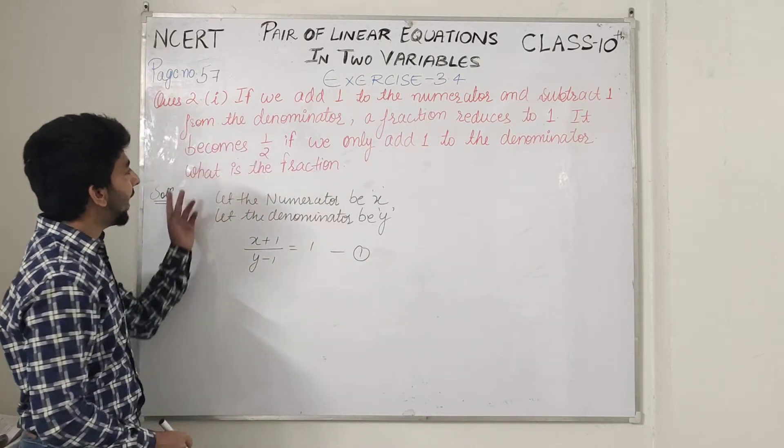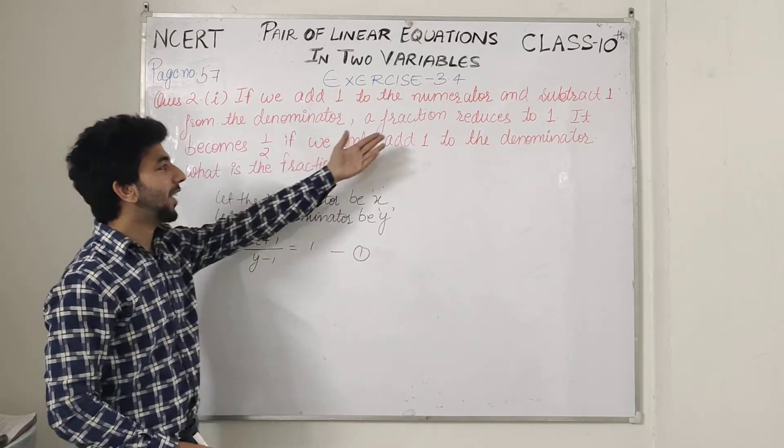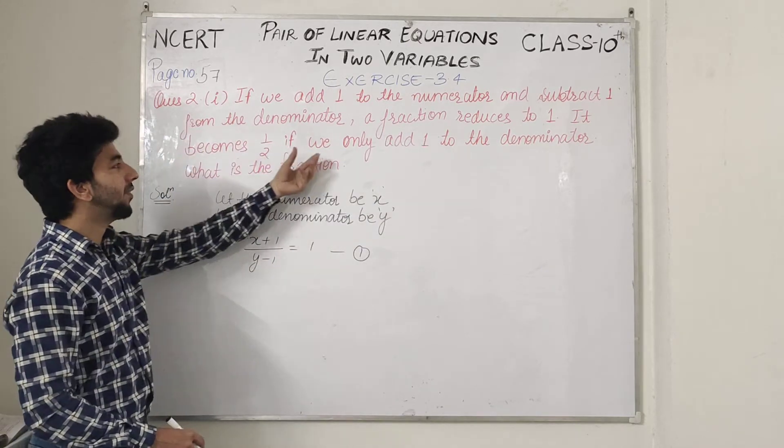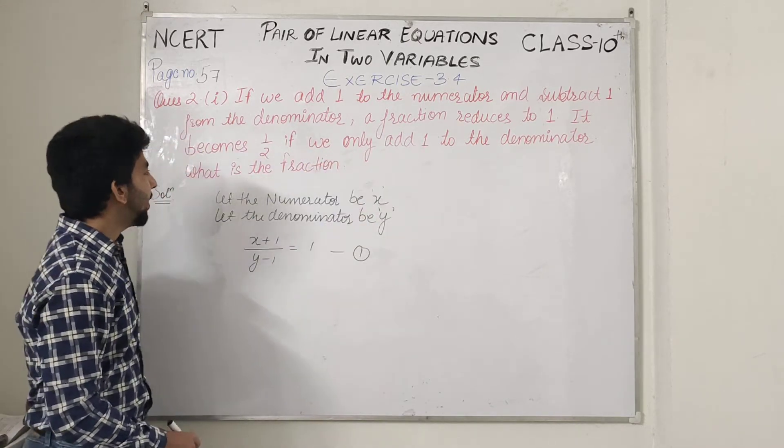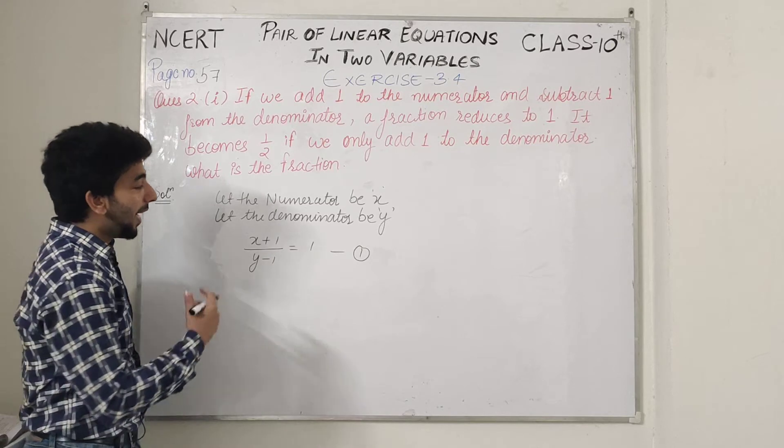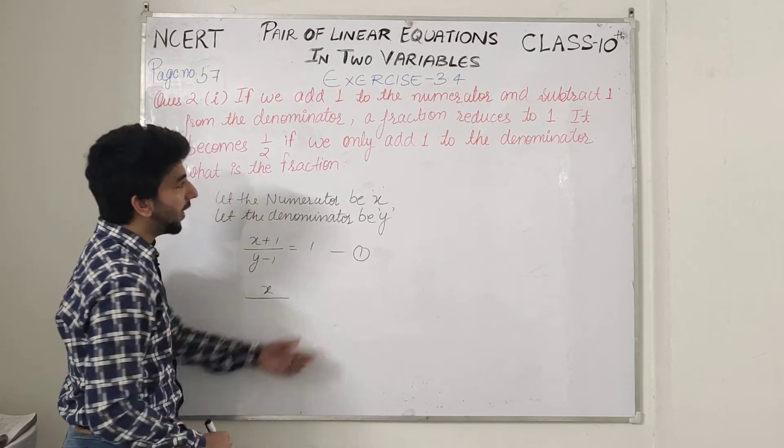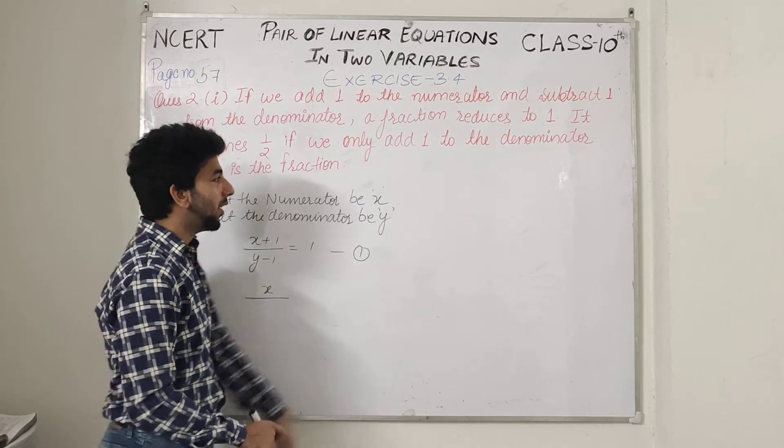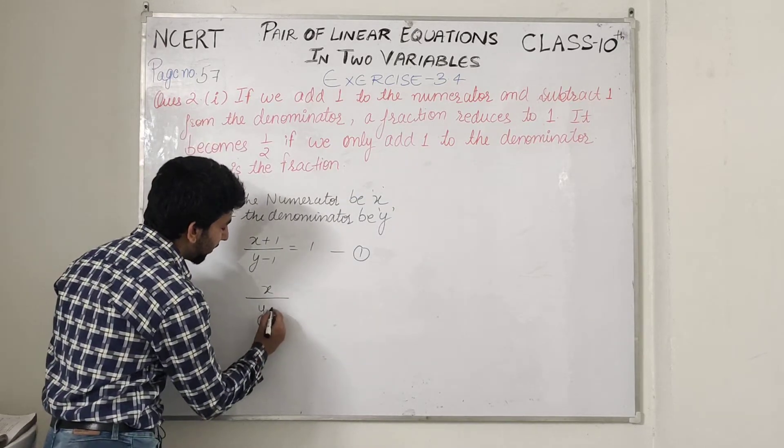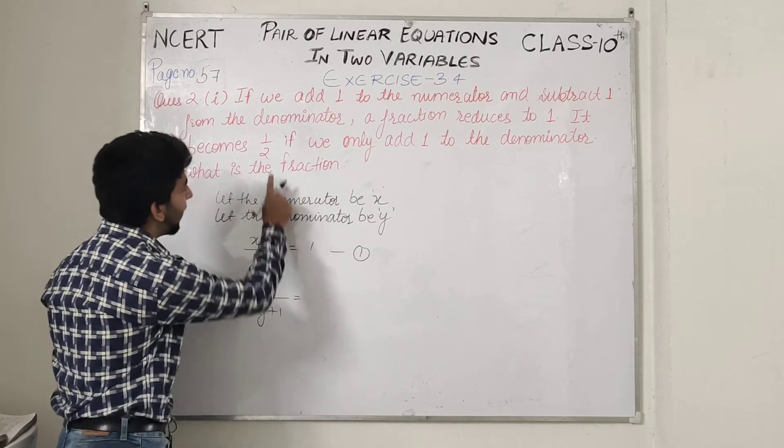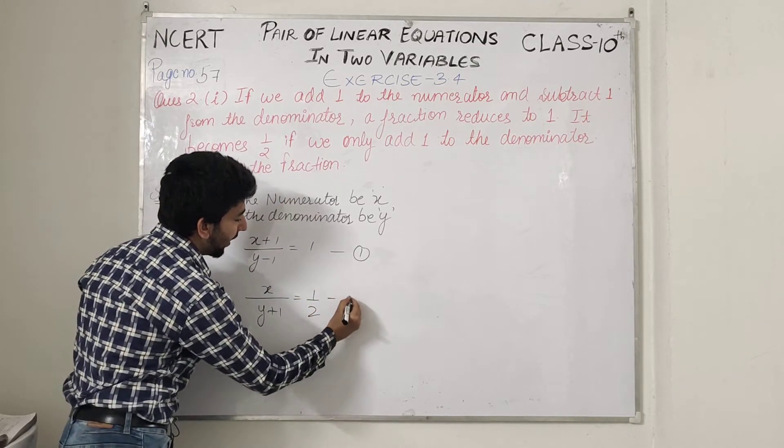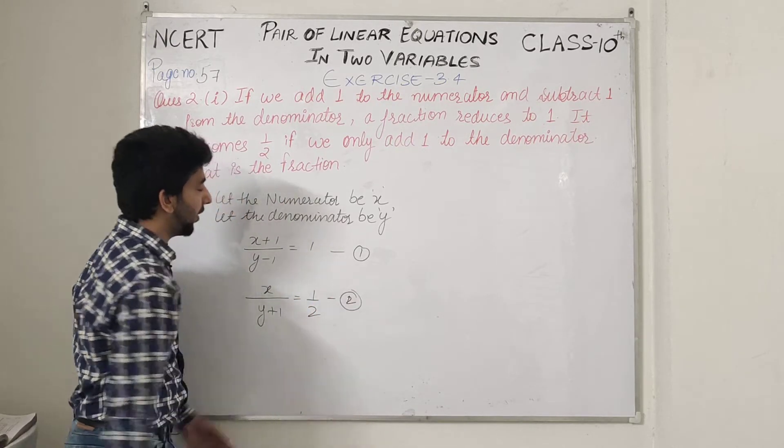Second relation: a fraction becomes half if we only add 1 to the denominator. So numerator is x, denominator becomes y plus 1. The fraction equals half. This is our second equation.